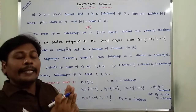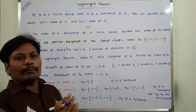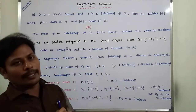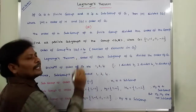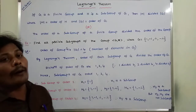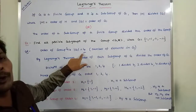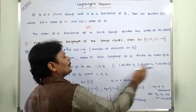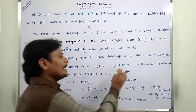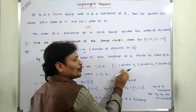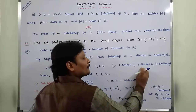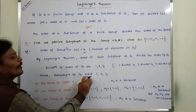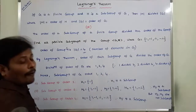So now, mod H divides mod G — the order of the subgroup divides the order of G. That means what are the divisors of four? Those are the orders of subgroups. Divisors of four are 1, 2, and 4. So 1 divides 4, 2 divides 4, 4 divides 4. So these are the possible subgroup orders: subgroup order 1, subgroup order 2, subgroup order 4, all dividing the order of G.